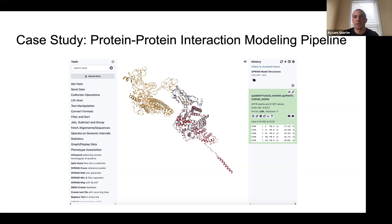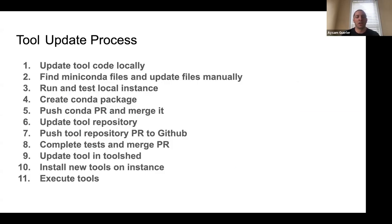We made experiments to validate the method, comparing it to experimental methods using the BioGRID database — tools all available in Galaxy — and it performs comparatively well. But there were quite a few challenges transferring this pipeline to Galaxy. One challenge was the general tool update process: I rewrote all the scripts in Python, with fewer dependencies, much more readable and easier to modify. It was feasible because I knew exactly what I was looking for.